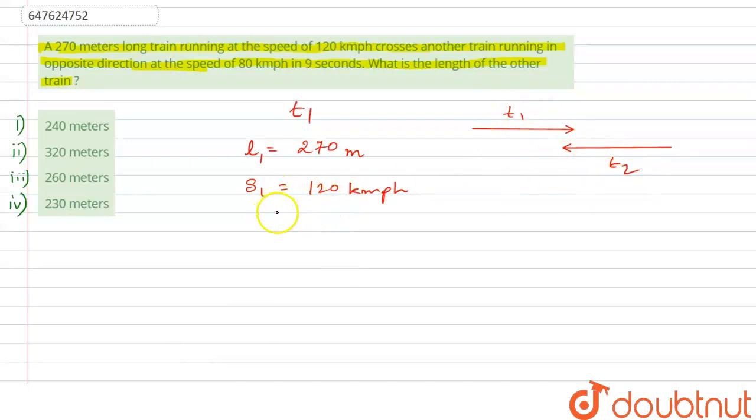So, now train 2 - train 2's speed: train 2's speed is 80 km per hour, okay? And both have crossed each other. Crossing time equals to 9 seconds, okay? So, this is our crossing time.